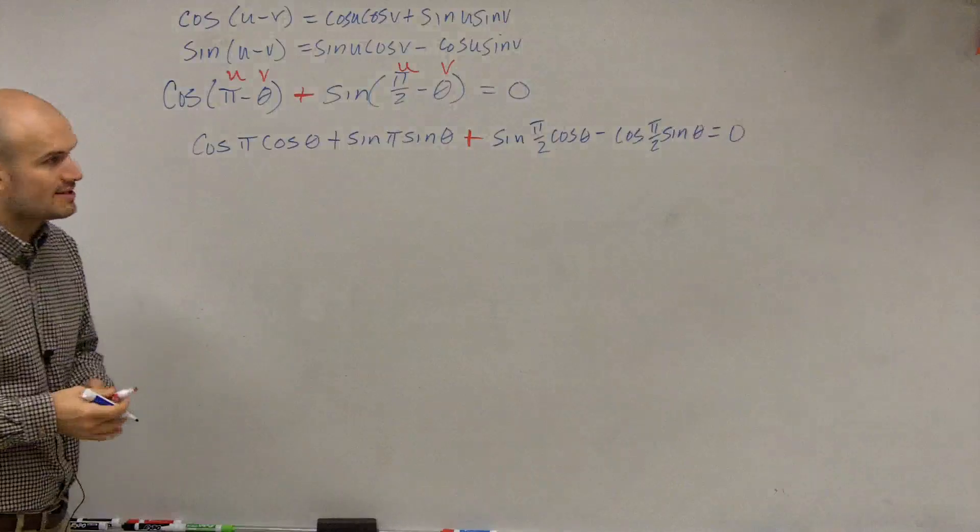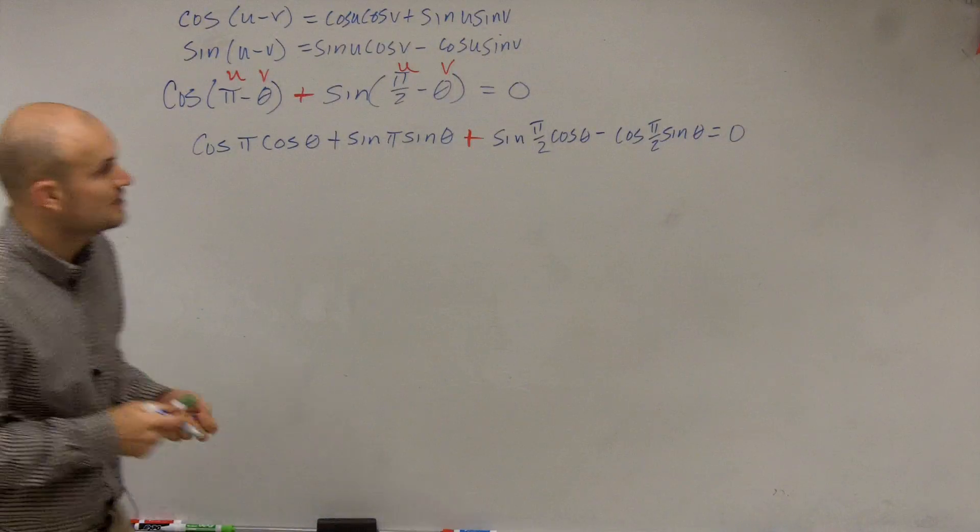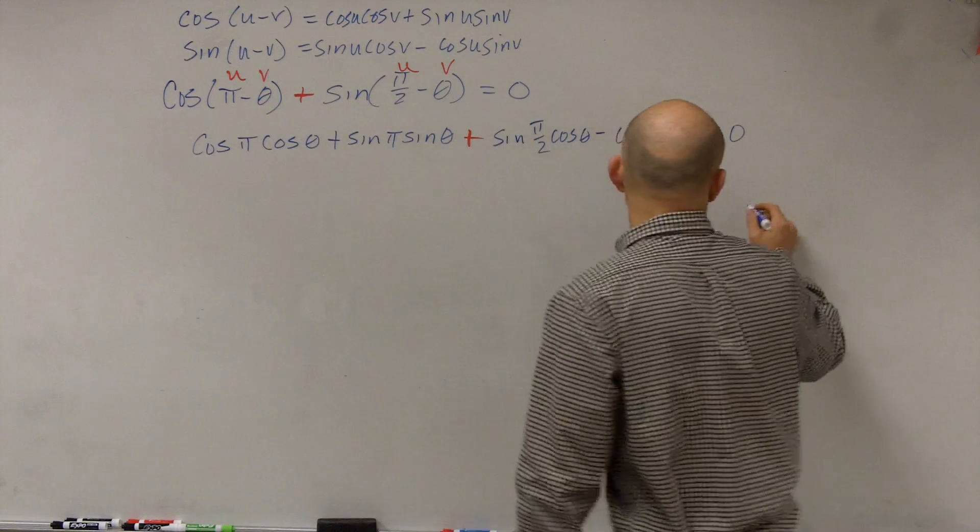So now let's go ahead and simplify. So we need to evaluate for the sine and cosine of pi and pi halves. So I'll kind of create a nice little unit circle here.